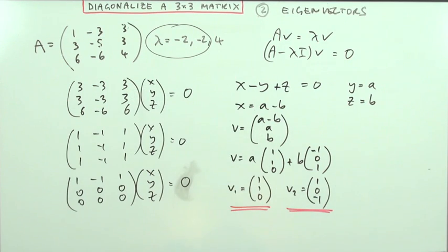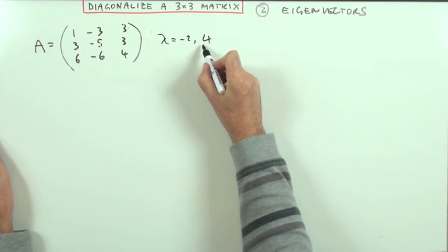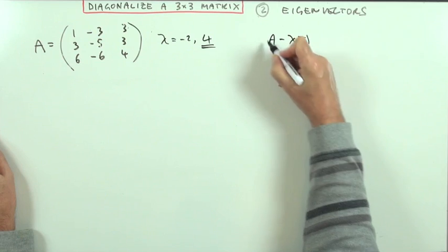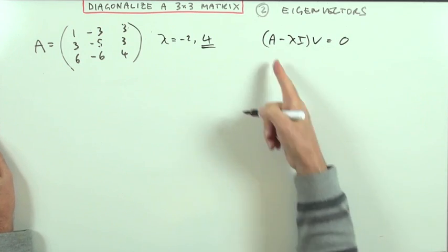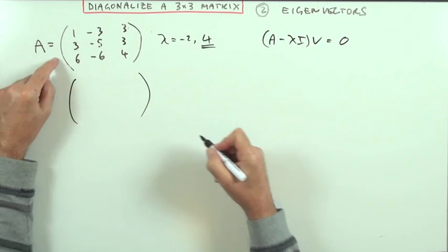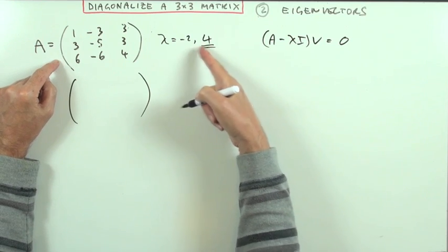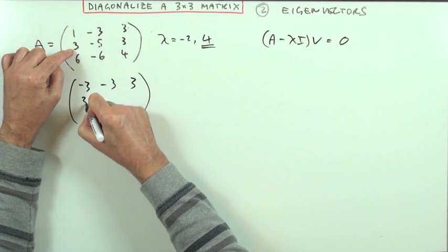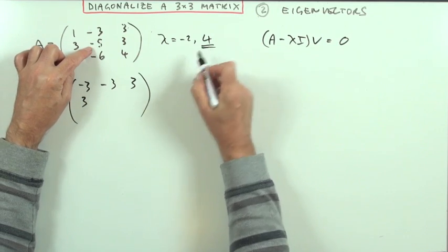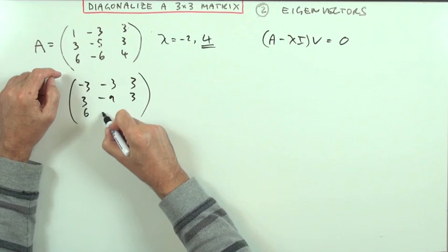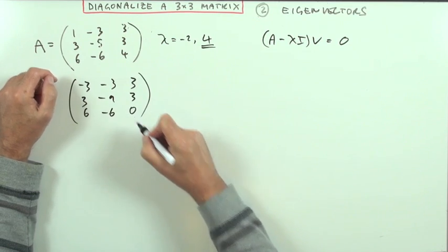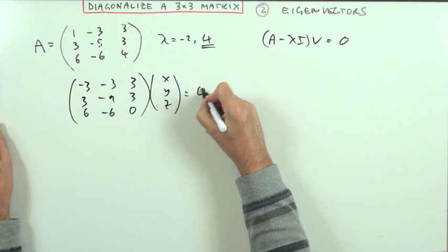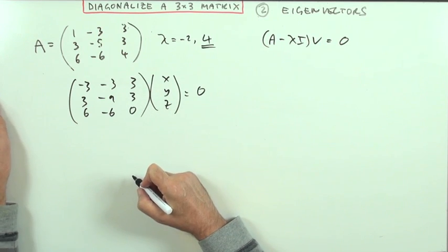Now for λ = 4. Subtracting 4 from the main diagonal: the entries become (negative 3, 3, 3), (3, negative 9, 3), (6, negative 6, 0). So the matrix (A − 4I) times (x, y, z) equals (0, 0, 0). Since the right-hand side is zero, I can concentrate on row-reducing the coefficient matrix.